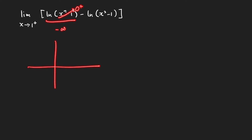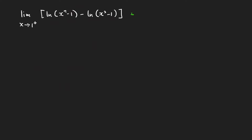Keep in mind the graph of our ln function: when you take the ln of a small positive number, you get a large negative number. Similarly, ln(x³ - 1) will also approach negative infinity as x approaches 1 from the right. So this is in the form negative infinity minus negative infinity, considered as the indeterminate form infinity minus infinity. To evaluate this limit, we use the same technique as the previous problem — combining these two terms into a single term.